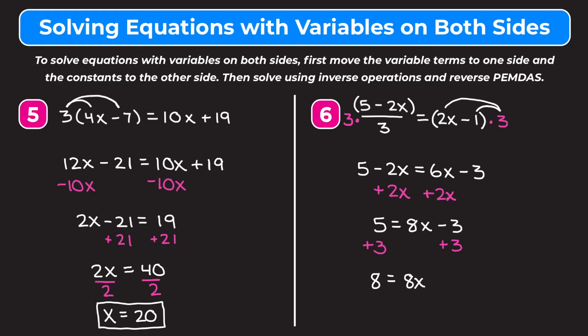Finally, to get rid of this 8, I divide both sides by 8. On the left, 8 divided by 8 is 1, and on the right, 8 divided by 8 is 1, so I'm left with 1x, or x. So x equals 1. Hopefully this video helped you understand how to solve equations with variables on both sides. Remember: get the constants on one side, the variable terms on the other, then solve using inverse operations and reverse PEMDAS.